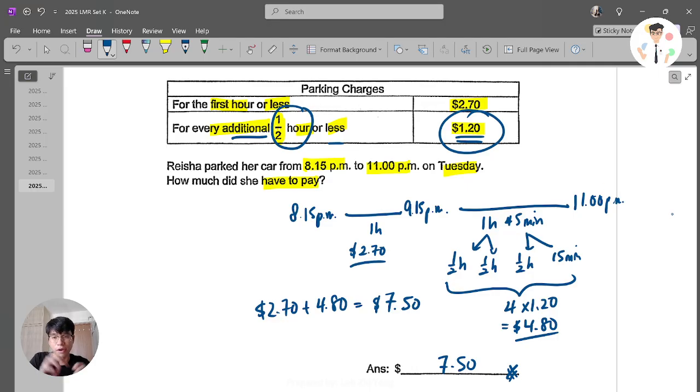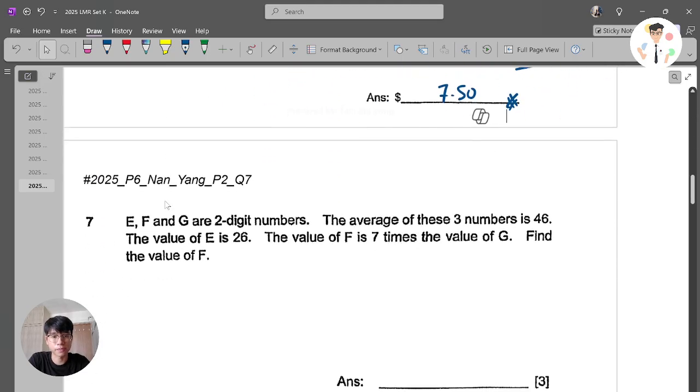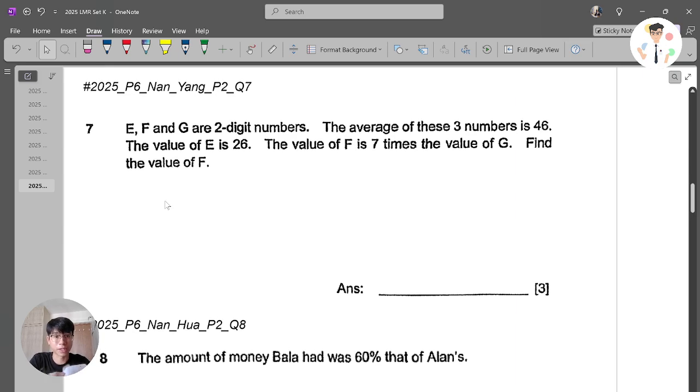So $2.70 plus $4.80 is $7.50 to be paid here. Of course, you can just use 1 hour and 45 divided by half. But this is basically a very visual way of presenting everything clearly for you. Let's move on to our next question from Nanyang Paper 2, question number 7.